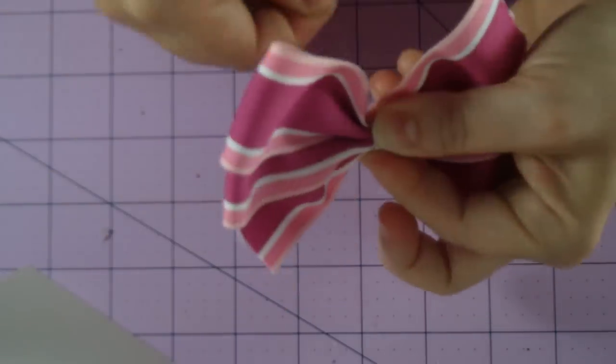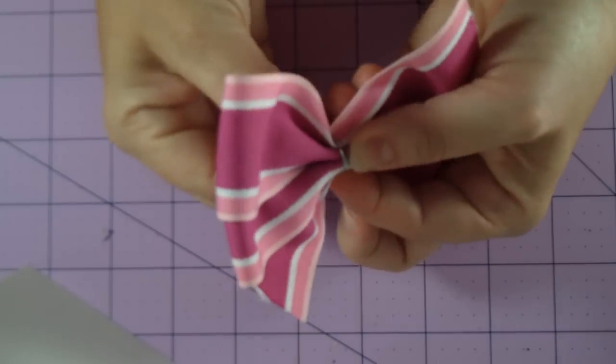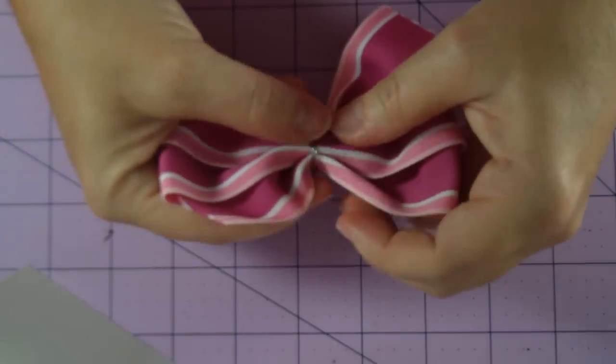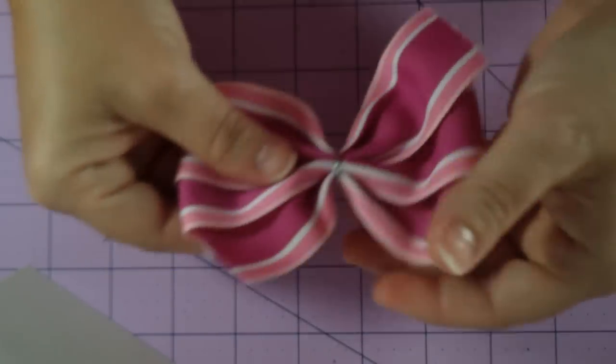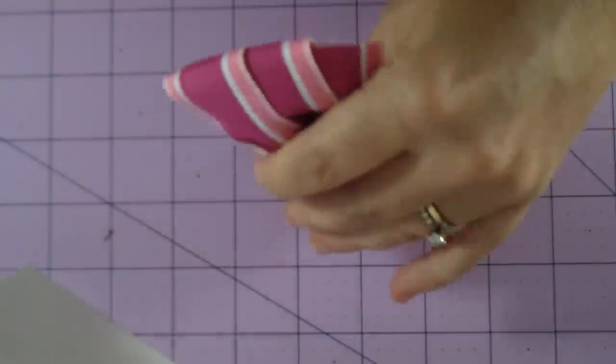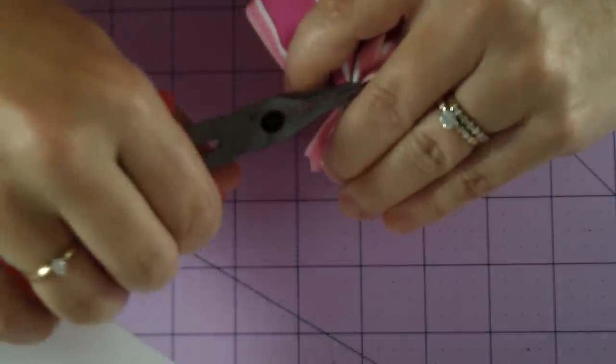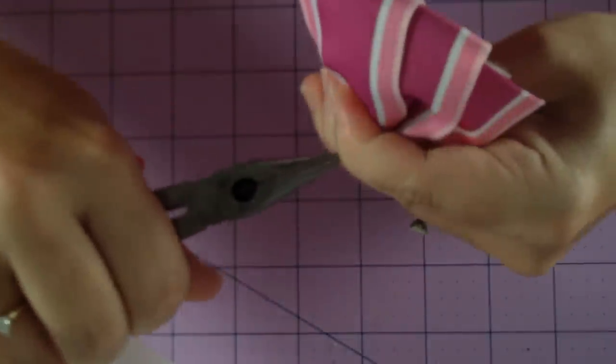You're just going to wrap around your center just like that. Now because it's not super tight yet you can kind of look and see if you need to move it, if you weren't right in the center. But that looks pretty good, so now I take a pair of pliers and pull my wire tight both sides just like that.